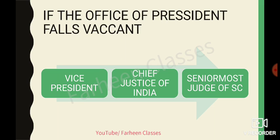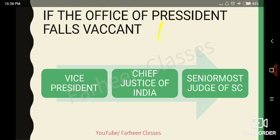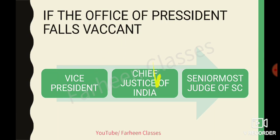Now, if the President's office becomes vacant, what will happen? If the President is not there, the Vice President will act. If the Vice President is also not there, then the Chief Justice of India will act as President of India. And if the Chief Justice is also not available, then the senior most judge of the Supreme Court will act as the President of India. So remember: President → Vice President → Chief Justice of India → Senior most judge of the Supreme Court.